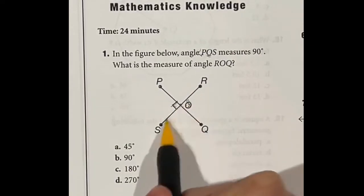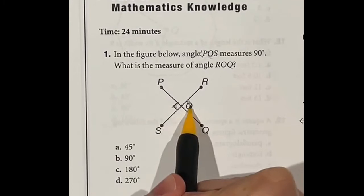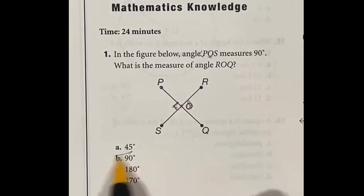Well, by vertical angle theorem, which is when you have two lines crossing, this is always equal to that guy. So if this is 90, that's 90 as well. Answer B.